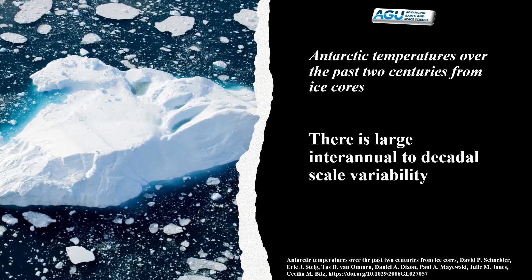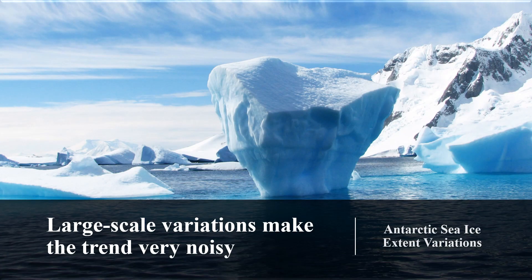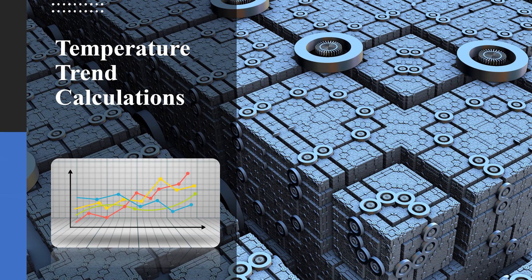A study of Antarctic temperatures over the past two centuries warned that there is large inter-annual to decadal scale variability, and also warned of the short and sparse instrumental observations. We were warned again by a previous video of ours about Antarctic sea ice that large-scale variations make the trend very noisy and difficult to generalise. A combination of these issues made the plotting of temperature trends more difficult than normal.